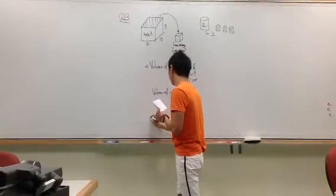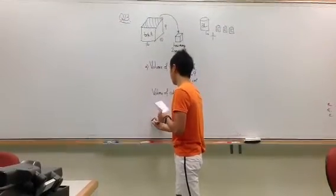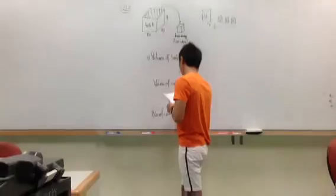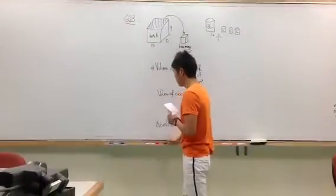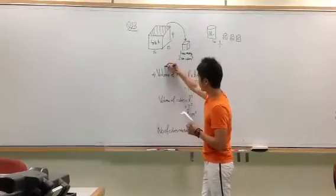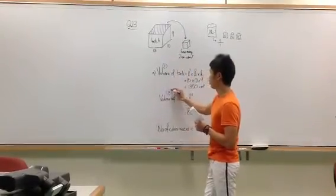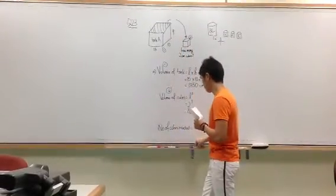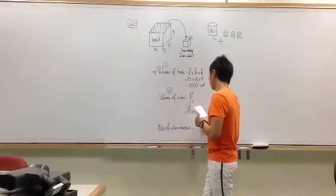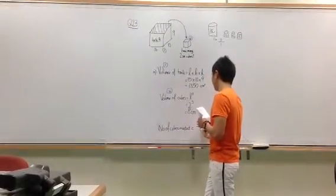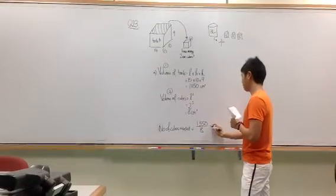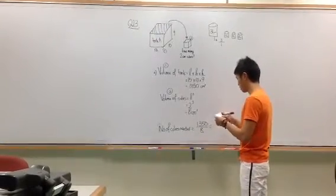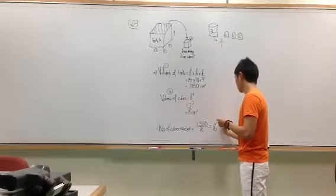So similarly, here, the number of cubes needed will be this volume here, divided by the volume of the cubes. So you take 1,350 cubic centimeter, divided by 8 cubic centimeter. Remember, do not write the units in the middle of your working. So if you press the calculator once again, you'll get 168.6.